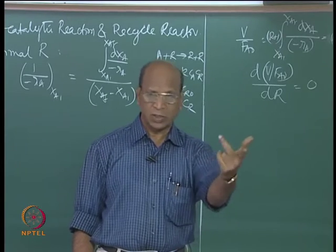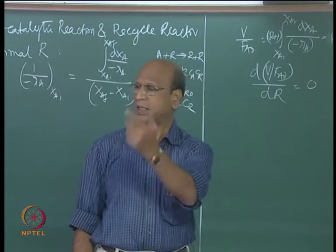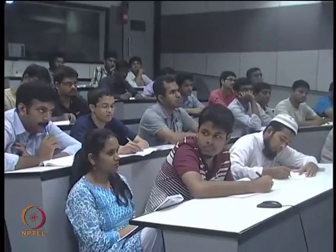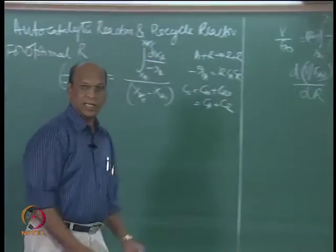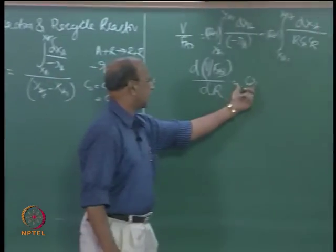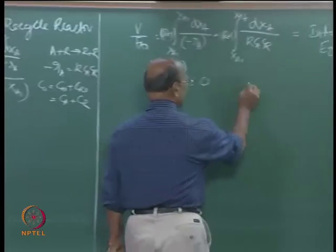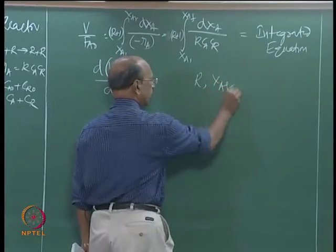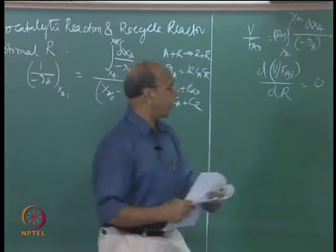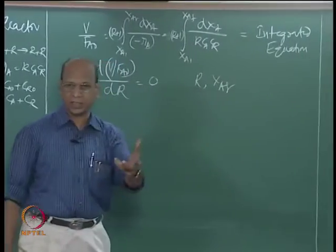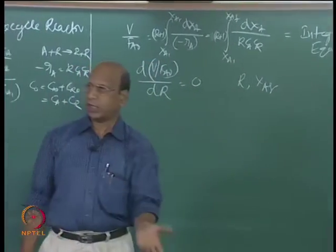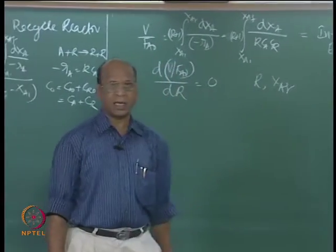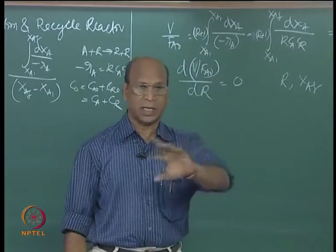Has anyone done the unsteady state CSTR? This is the problem. So the analytical procedure is: once you have the derivative equal to zero, that equation will be only in terms of R and XAF. For a given conversion of 90 percent or 80 percent, you solve for R — and you will not get a simple analytical expression; it is mainly trial and error.